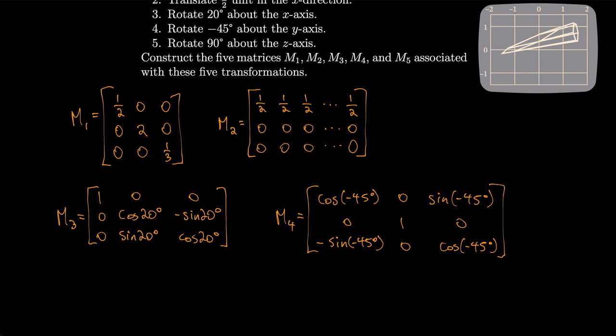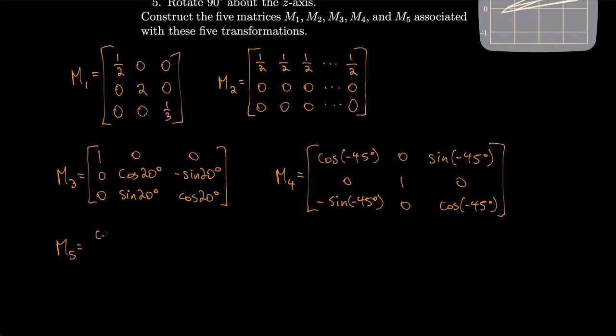Last but not least is M5. We're rotating about the z-axis. So cos(90°), -sin(90°), sin(90°), and cos(90°). And 0, 0, 0, 1.